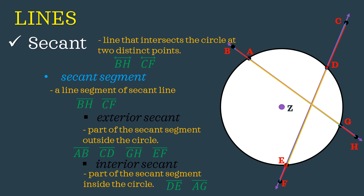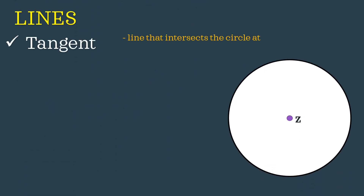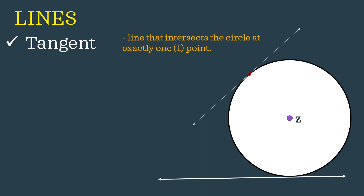Another important type of line related to our circle is the tangent line — a line that intersects the circle at exactly one point. Just only one point on our circle is being intersected by the line. Since tangent line is also a line, we use the symbol for line. What we have is line BS, which is a tangent line, and also line AN.